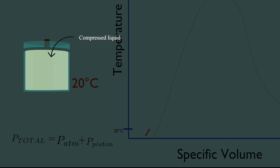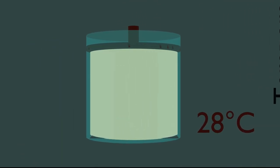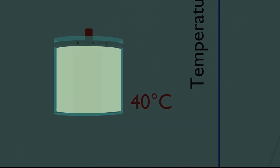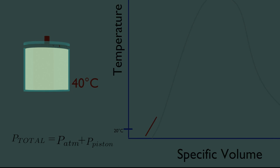Now the heat is added to it, and the temperature rises. Heat is now transferred to the water until its temperature rises to, say, 40 degrees celsius. As the temperature rises, the liquid water expands slightly, and so its specific volume increases. Water is still a compressed liquid at this state, since it has not started to vaporize.